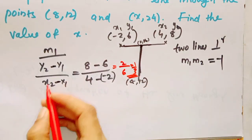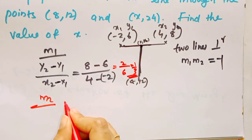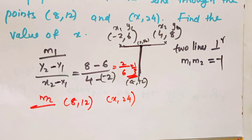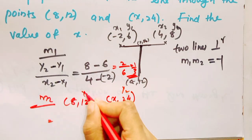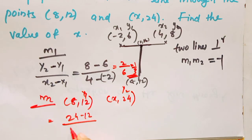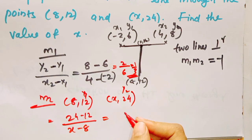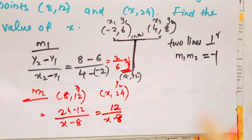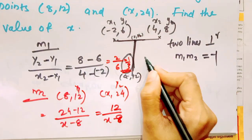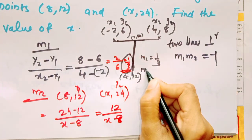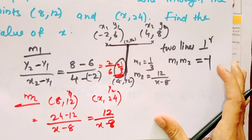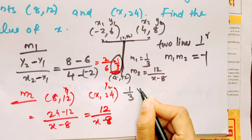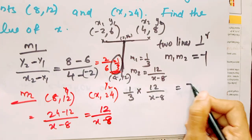Then we have the slope m1. The second set of points is 8, 12 and X, 24. Using the slope formula: y2 minus y1 by x2 minus x1, that is 24 minus 12 divided by x minus 8. So m2 equals 12 by x minus 8. Now m1 is 1 by 3, and 1 by 3 into m2 equals 12 by x minus 8, which equals negative 1.